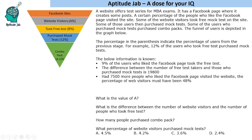We are given that 9 percent of users who liked the Facebook page took the free test. Since A percent of Facebook visitors went to the website and B percent of those took the free test, A percent times B percent equals 9 percent, which means A times B equals 900. We need to find A and B using the given statements.